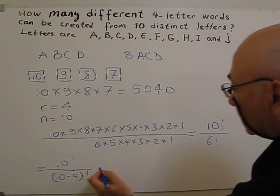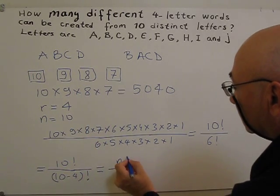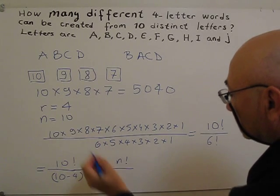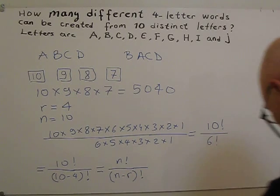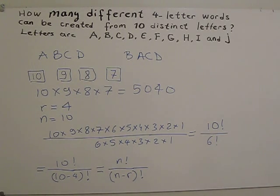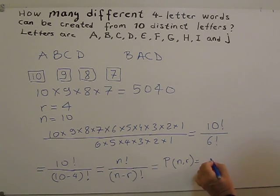So as you see, ten is N factorial, R is four, and minus R factorial. So this is the permutation formula. We use two different notations: one notation N, P, R, another N with subscript R. This is mostly for calculator.